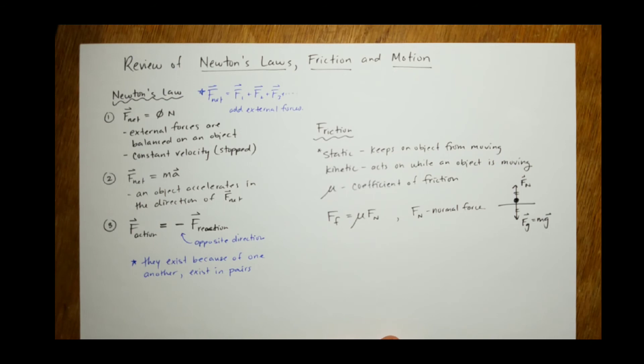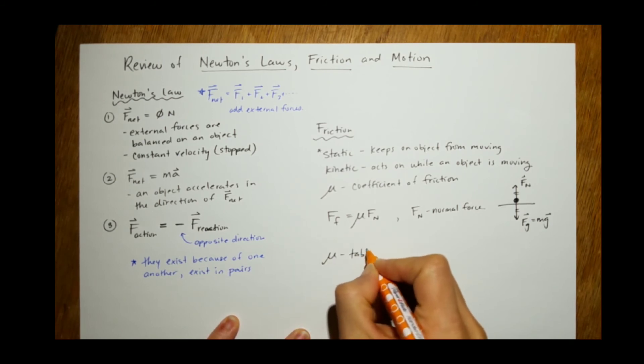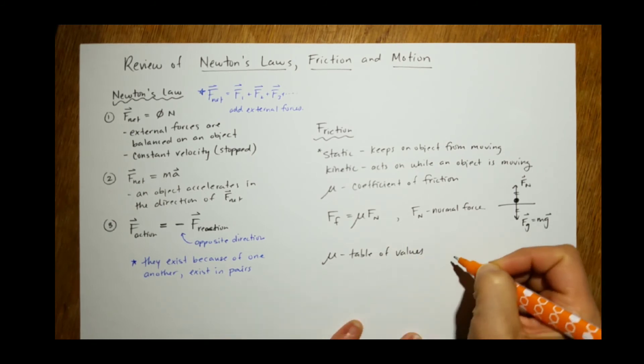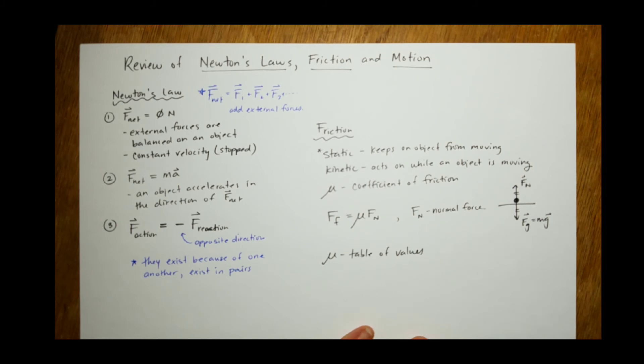And usually, friction acts in the opposite direction, but it does not need to act in the opposite direction of motion. For example, walking. And the other thing is mu, there's a table of values in your textbook that are found experimentally by scientists.